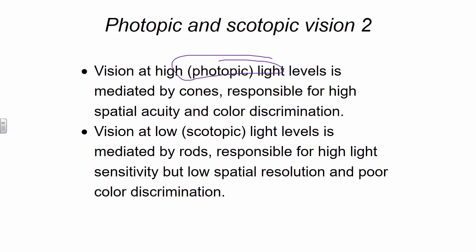Vision in photopic conditions is going to be cones. We have very high spatial acuity, typically in our cone system. Our cones are located primarily in the fovea — that's kind of in that center point of your retina, your optical center point. This is why when you try to read something, you don't hold it out to the side or try to read it in the periphery. You read it with your fovea right in the middle. Scotopic vision is going to be rods — very sensitive, but not very good spatial resolution and no color discrimination.